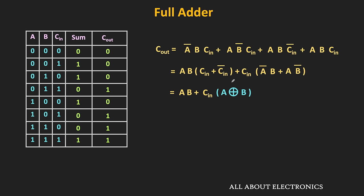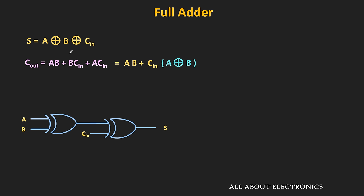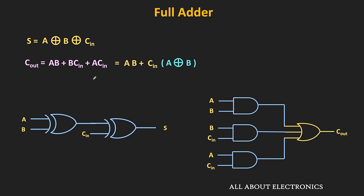The carry output can also be written as A dot B plus B dot Cin plus A dot Cin, and the sum output as A XOR B XOR Cin. Now based on these boolean expressions, let us see the logical circuit of this full adder. The sum output A XOR B XOR Cin can be implemented using two XOR gates. The output of the first XOR gate is A XOR B, which is given as input to the second XOR gate along with Cin. The Cout can be implemented using three AND gates and one OR gate.